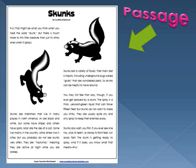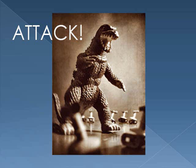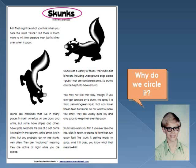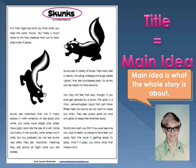We call this Paragraph Attack! The first step in Paragraph Attack is to circle the title. But why do we circle it? We circle it because the title often shows the main idea of the piece. The main idea is what the whole story is about.